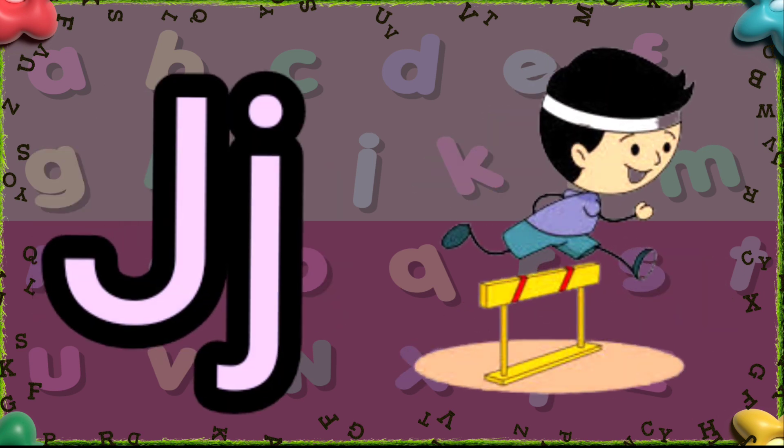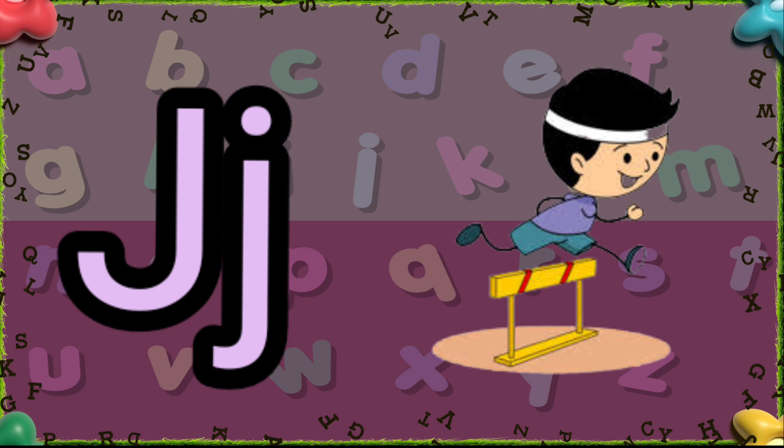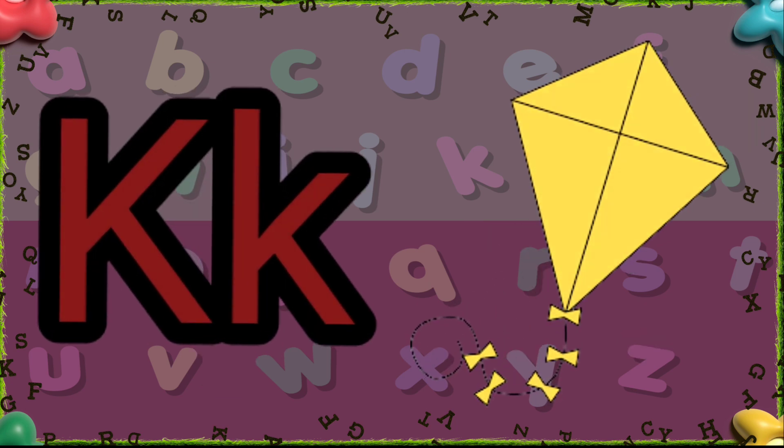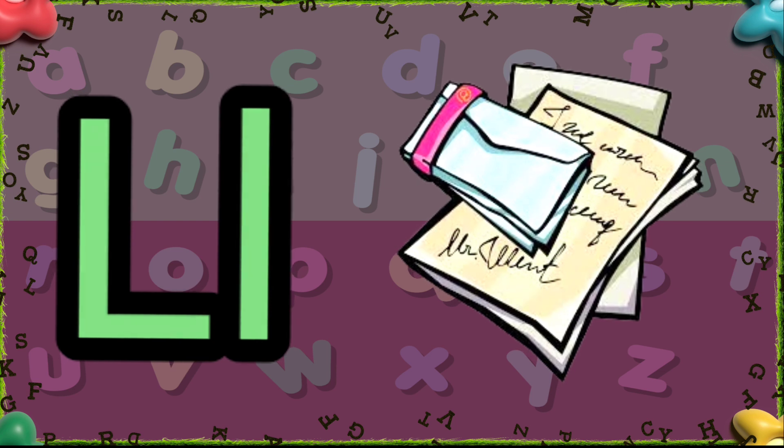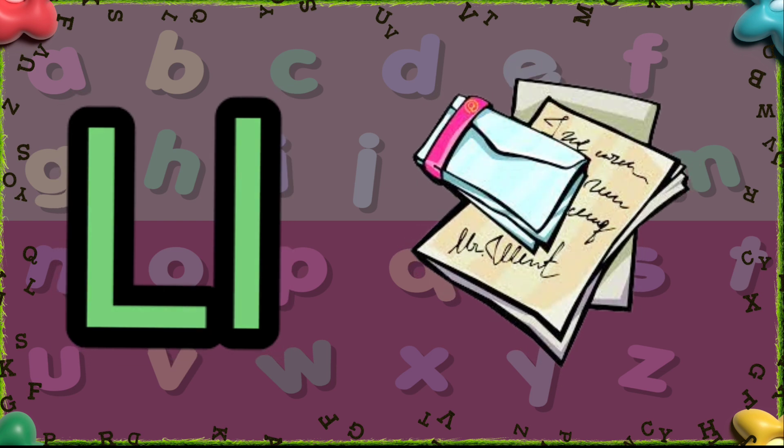K is for Island. J is for Jump. K is for Kite. L is for Letter.